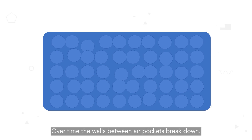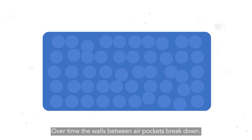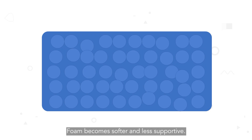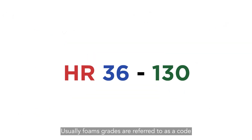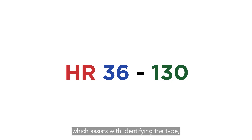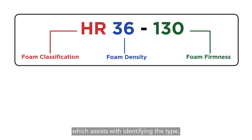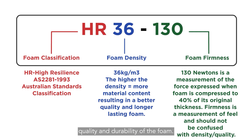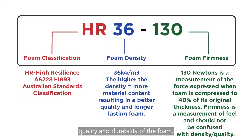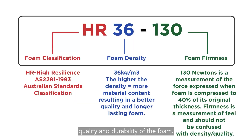Over time, the walls between air pockets break down. Foam becomes softer and less supportive. Usually foam grades are referred to as a code, which assists with identifying the type, quality, and durability of the foam.